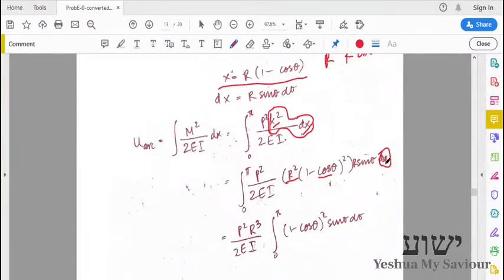So that's what we have here. We can substitute p squared by 2EI times r squared (1 minus cos theta) squared r sin theta d theta. So obviously we have r here, r here. This is a constant, we can pull it out into the constant terms.